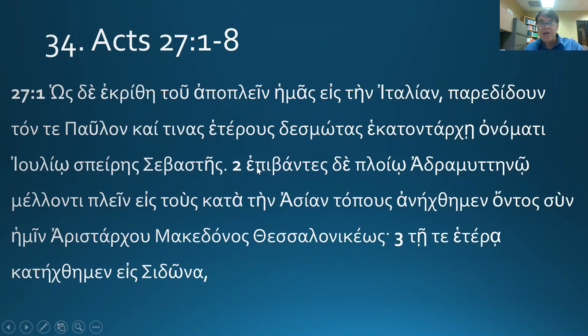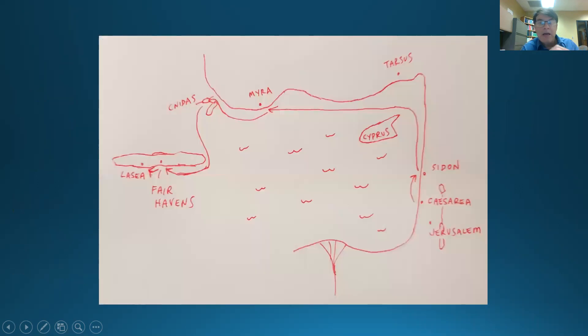And verse two, and having embarked on a boat, an Adramyttian boat. Having embarked, this is epibainō, but it's lost its ein. So it is aorist. It's an aorist participle. My ant is an active participle. So having embarked on an Adramyttian boat, this is a horrible map. I apologize for it. I started to use one that's lovely in my Bible.